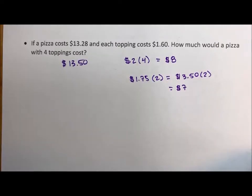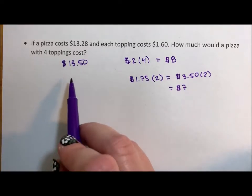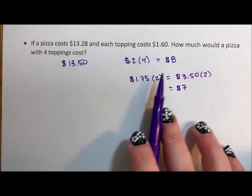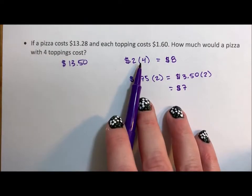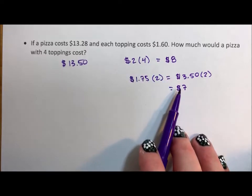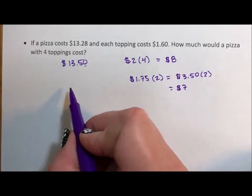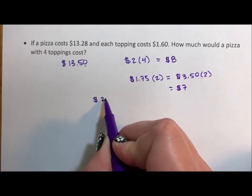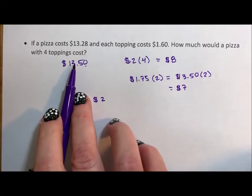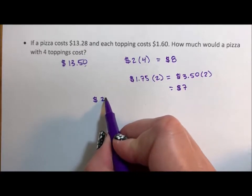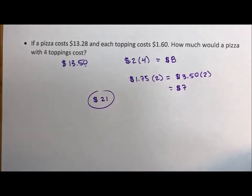So, $7.00 to $8.00 depending on how you want to estimate it, which means depending on if you did this $1.75 or the $2.00, you're gonna have your total being $21.50 to $21.50. About $21.00.